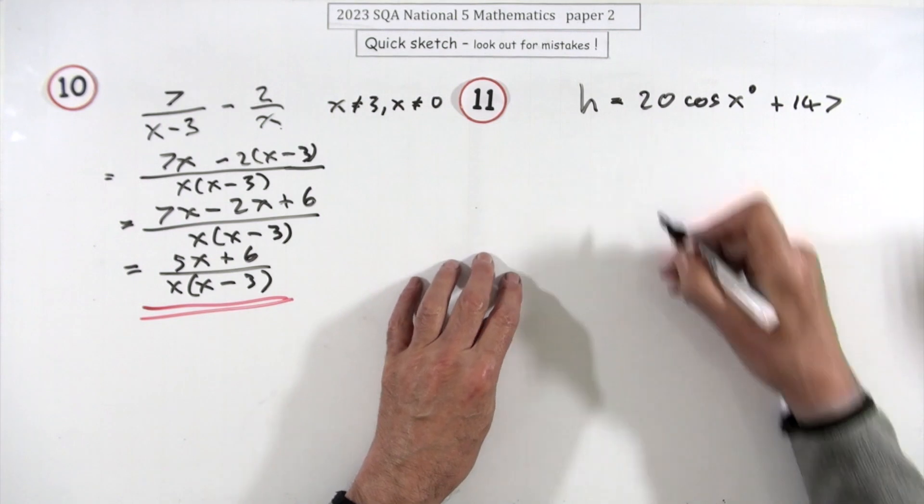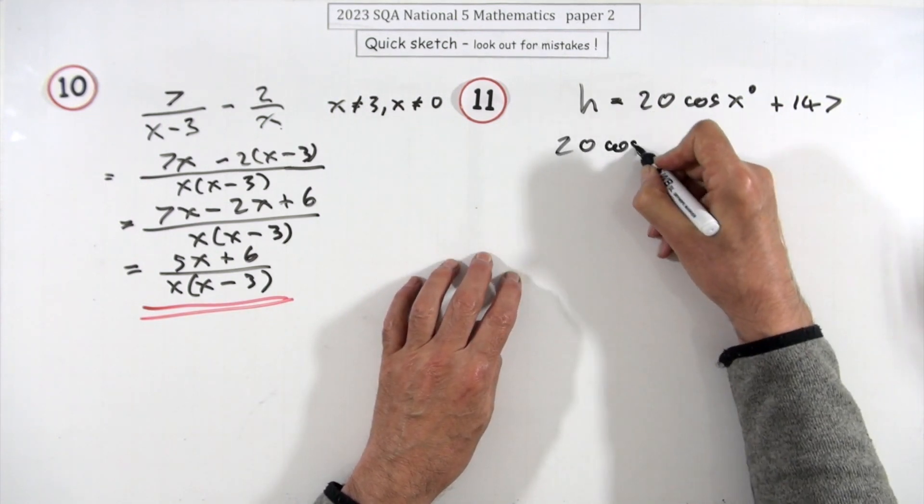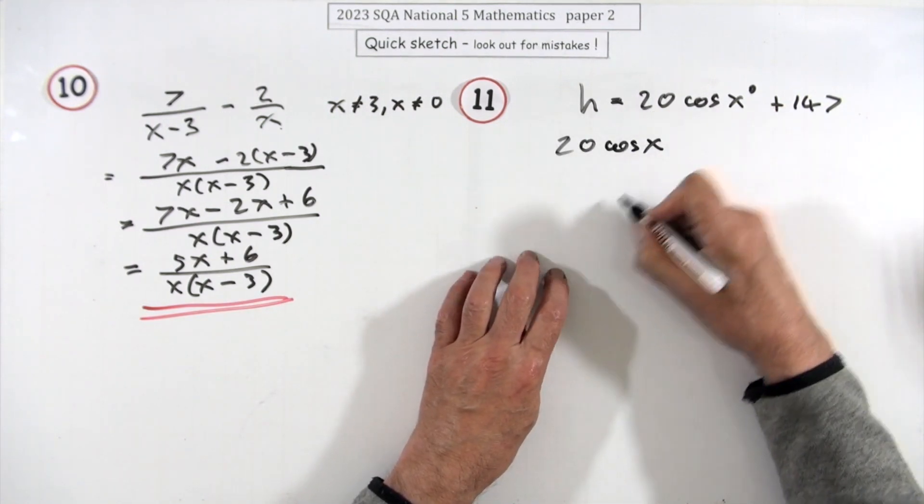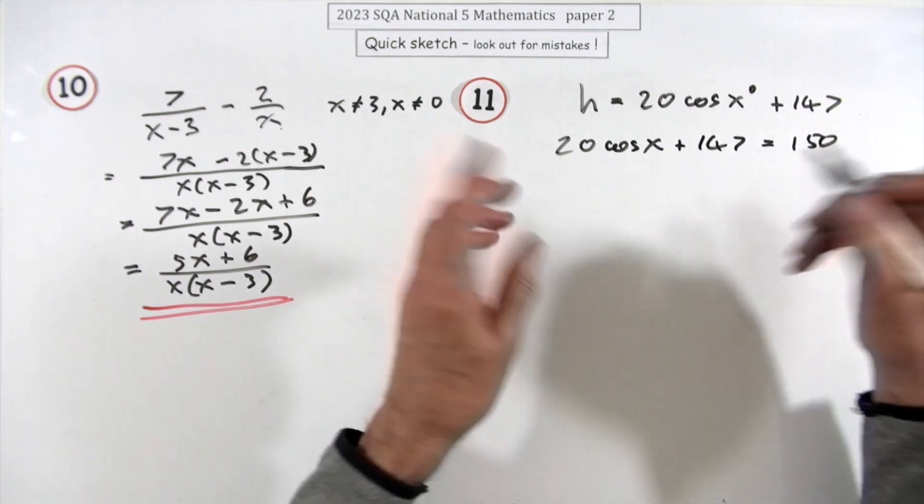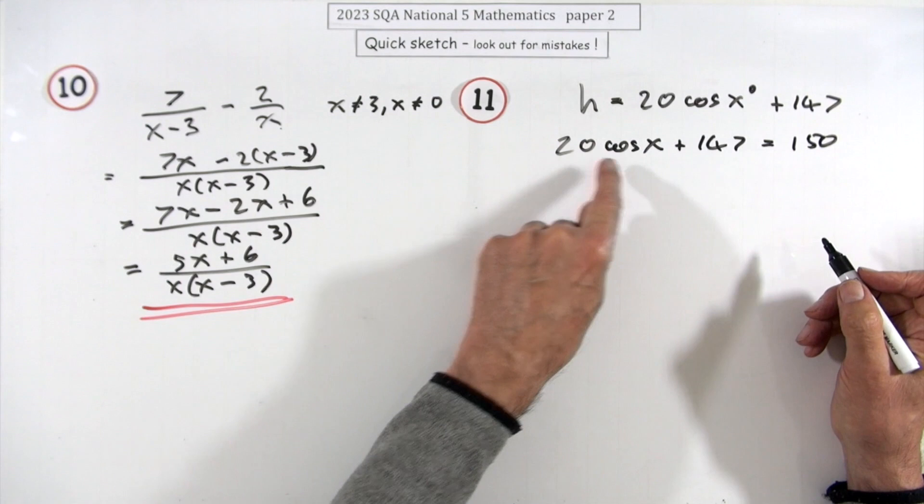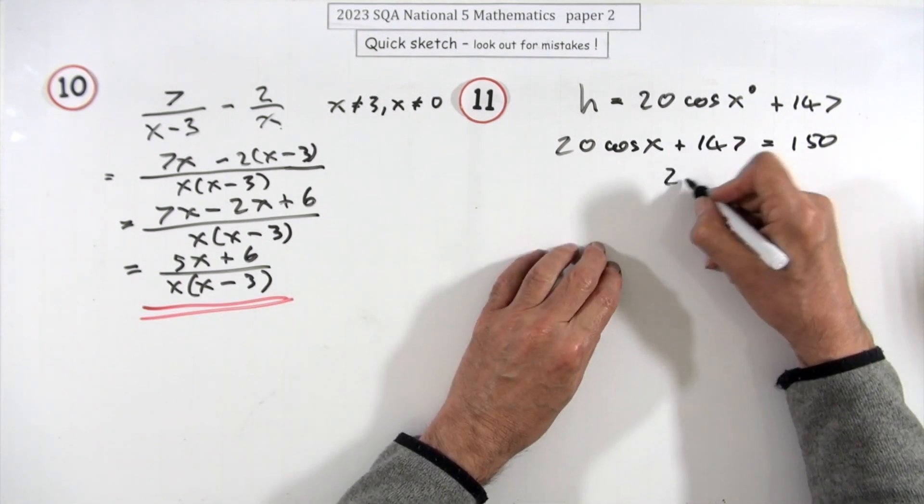Let's just solve that equation with the height equals 150. So 2 cos x plus 147 is 150. Now just get rid of all the bits and pieces. There's three things to get rid of. 147, get rid of that.